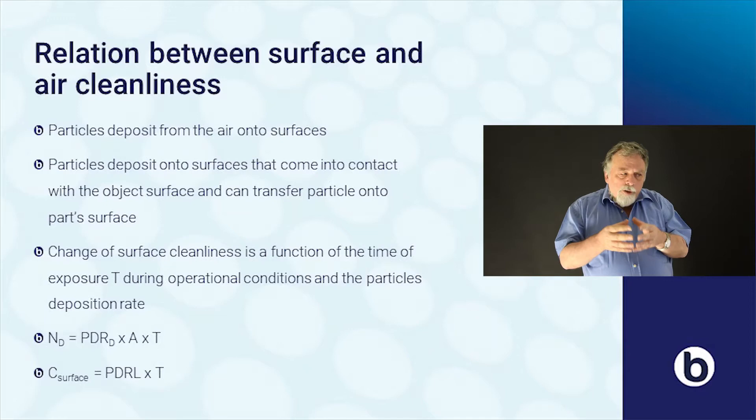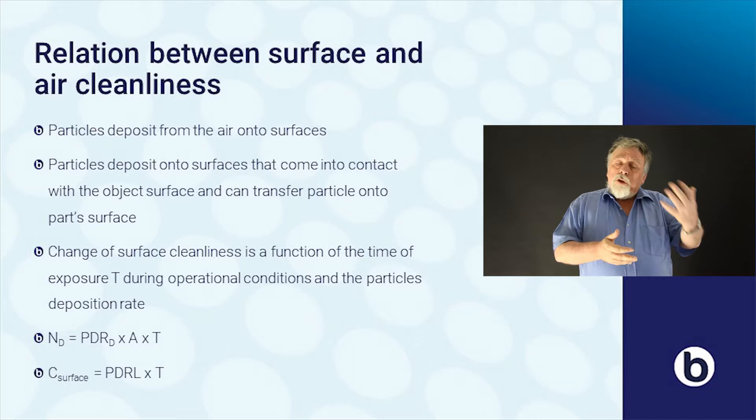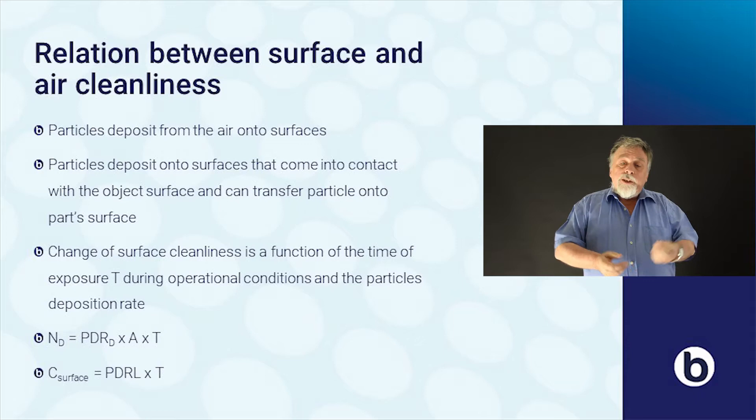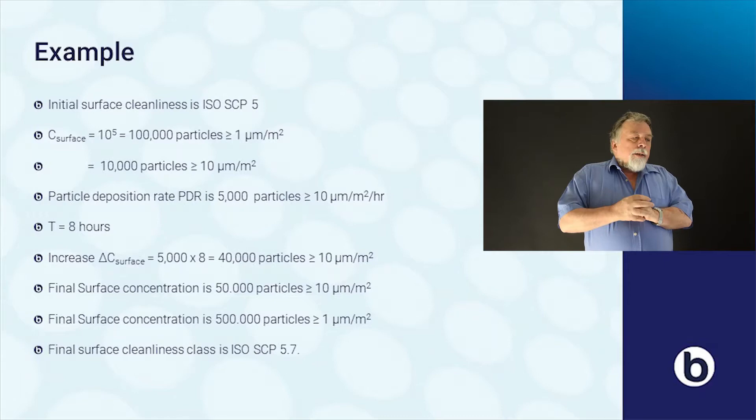When you have a clean surface, it will get contaminated by particles from the air. How fast a surface gets contaminated depends on the particle deposition rate. The number of particles that will come onto the surface is proportional to the surface area, the time it has been exposed, and the particle deposition rate. The overall surface cleanliness will increase by the particle deposition rate multiplied by time between cleanings — because every time you clean, the concentration goes down and then increases again by deposition.